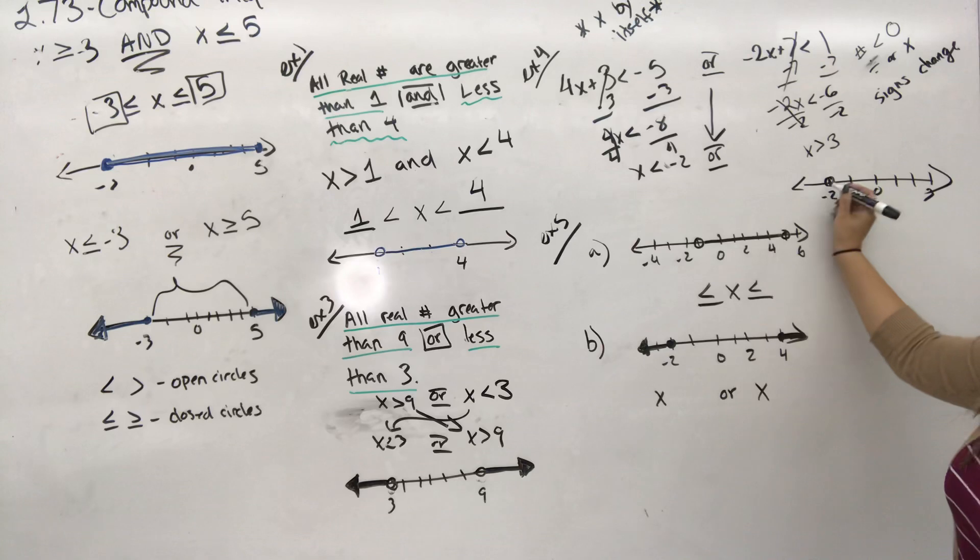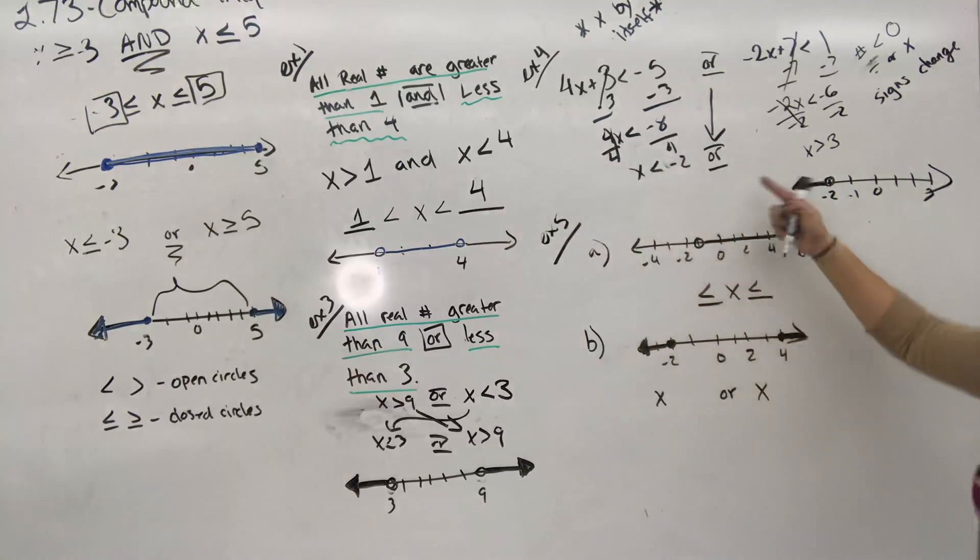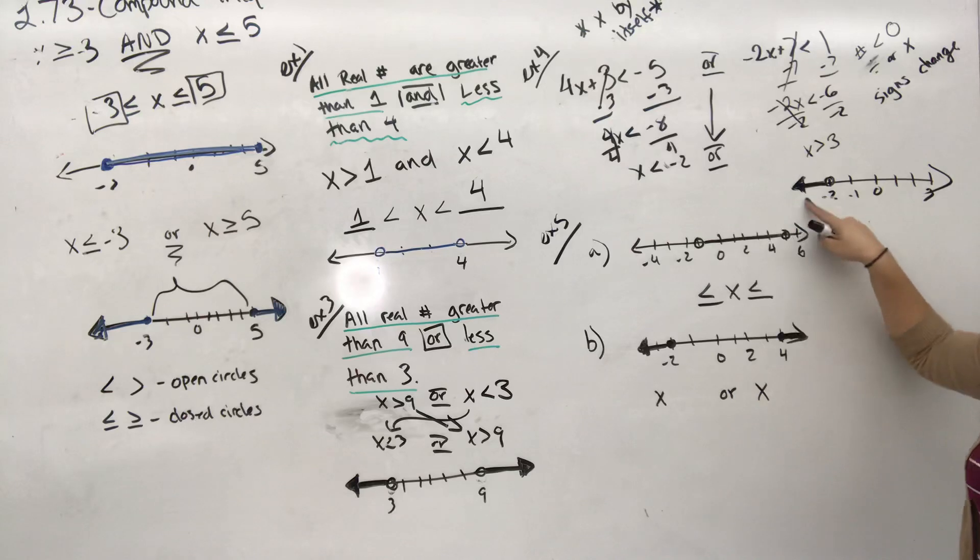Now x is less than negative 2. So therefore, you're drawing your arrow where the numbers are less than negative 2. That's negative 3, negative 4, negative 100, negative 1,000. Also, your arrow is facing that way. You're going to draw according to your arrow.